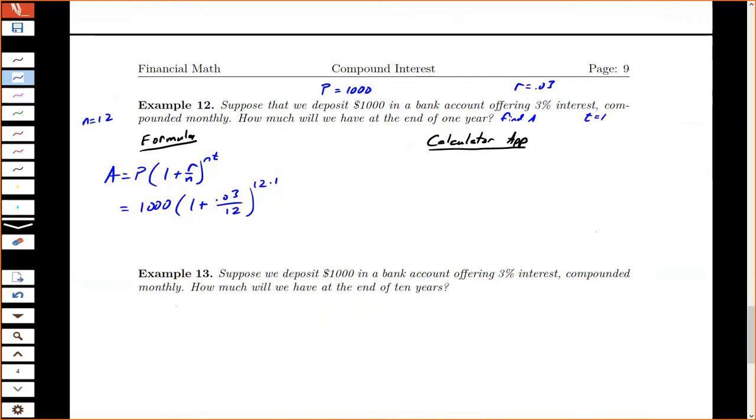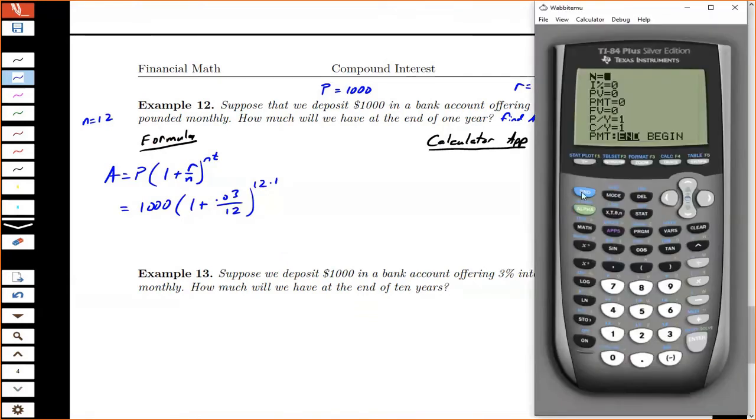So on my calculator, the way that I would enter this in is 1,000 times parentheses 1 plus 0.03 divided by 12. Close the parentheses. And now how the exponent works depends a little bit on your calculator. If your calculator actually has a superscript, if it moves it up high like this, then you don't need parentheses. You can just do 12 times 1 and you're done.